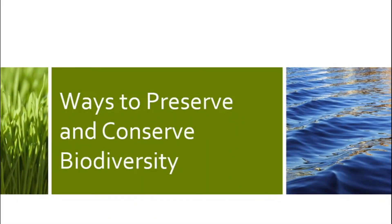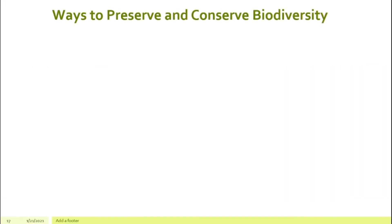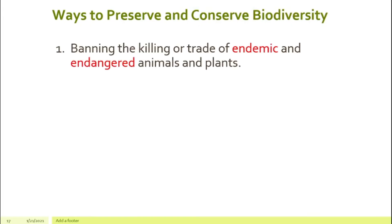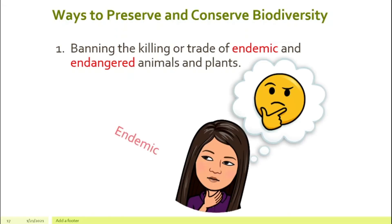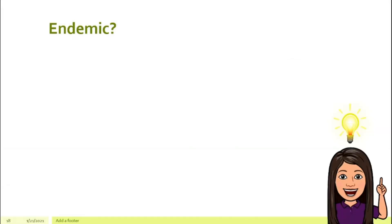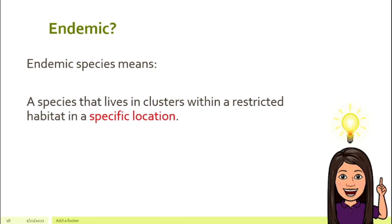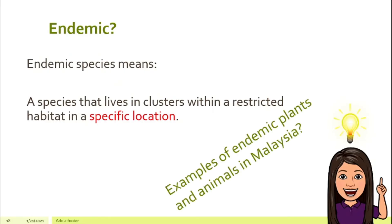So how can we preserve and conserve biodiversity? I will have a list of suggestions here. Number one, I think we should ban the killing and trade of endemic and endangered animals and plants. What is the meaning of endemic? Endemic simply means species that live in one specific location — for example, some of the plants and animals that can only be found in Malaysia or a few other countries close to Malaysia, for example in Southeast Asia.